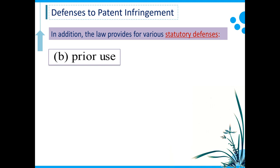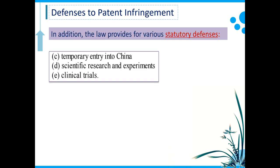But in the case of prior use, that use is not causing the consequence that the public already has access to the details of the invention. Number three: temporary entry into China. If the patented products were shipped to another country and the ship just passed by Chinese territory, that would not be considered as patent infringement under Chinese patent law, as the destination of these shipments is not the Chinese market.